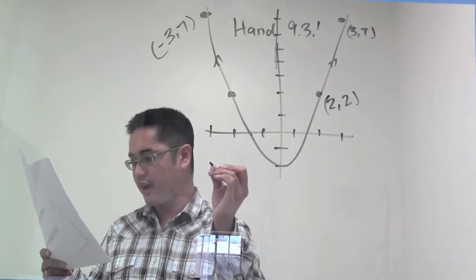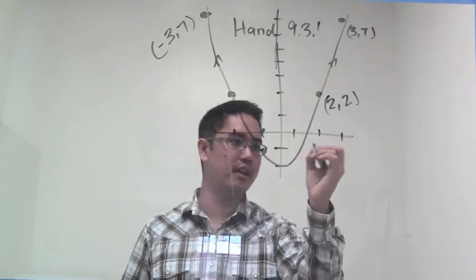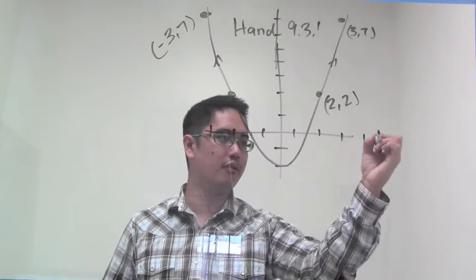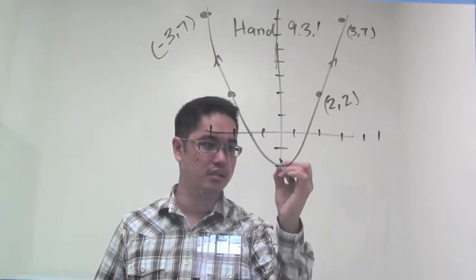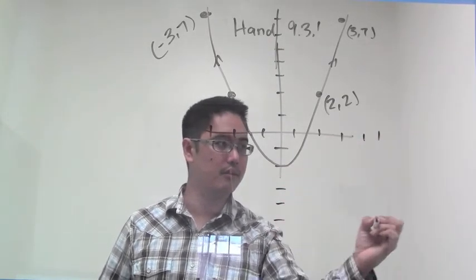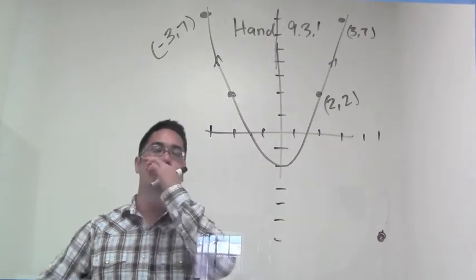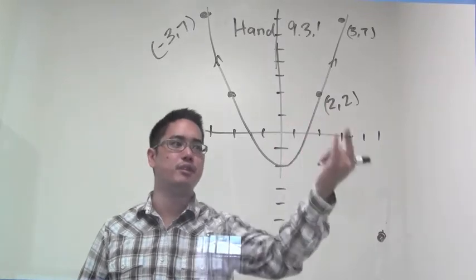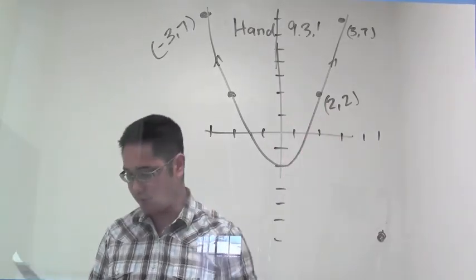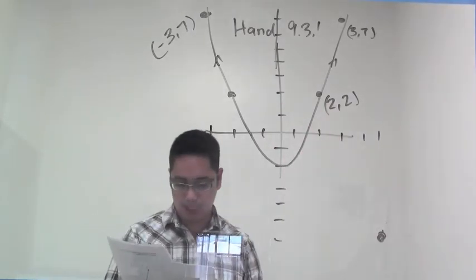It has about 5 comma 6—5 comma negative 6. So 1, 2, 3, 4, 5 comma negative 6. 1, 2, 3, 4, 5, 6. Alright, so here's what the problem is asking me: confirm whether or not these points land on the graph. I'm going to do it graphically and also mathematically.